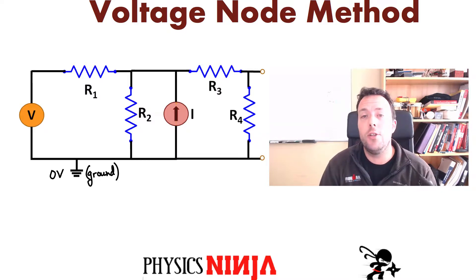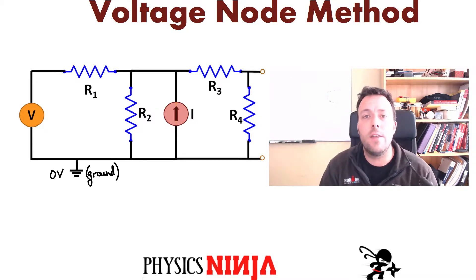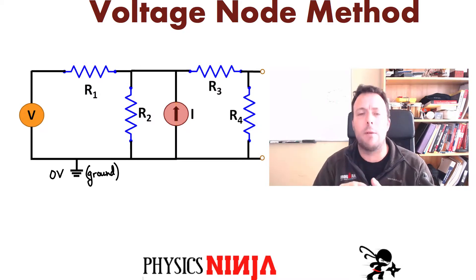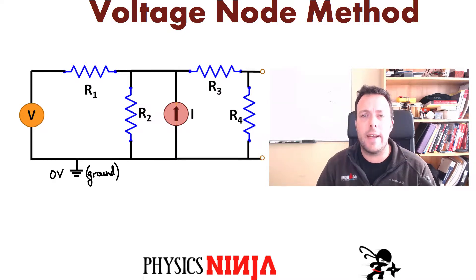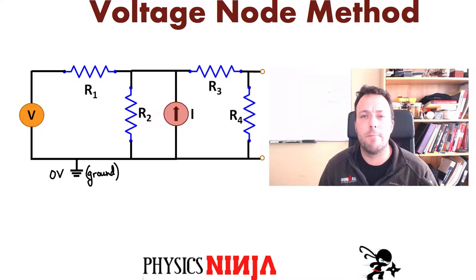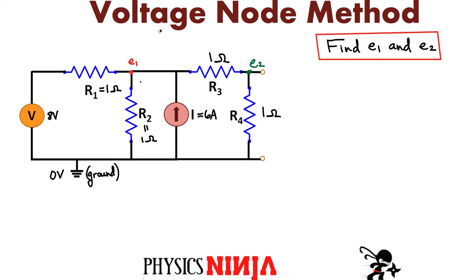So let's go ahead and use the voltage node method to solve this circuit, to find the voltage at the various nodes. And in another video, I'm going to look at the exact same problem but use the superposition method to solve it. So let's set up the voltage node method — I'll show you the steps to work through this circuit. We're going to start off with the voltage node method.